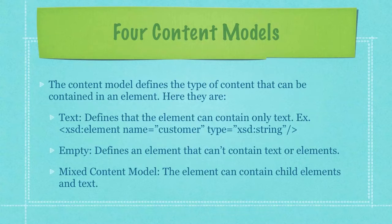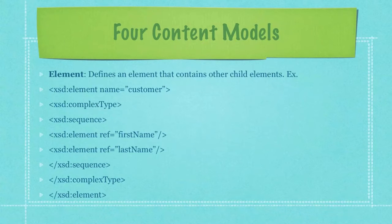The content model defines the type of content that can be contained in an element. Text defines that the element can contain only text, and here's an example of a text model. Empty defines an element that can't contain text or elements. Mixed content models allow the element to contain child elements and text. An element content model defines an element that contains other child elements, and here's an example.